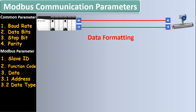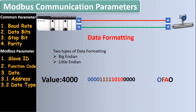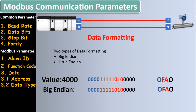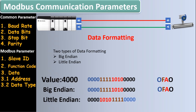Data formatting is the sequence of bytes of a word in digital data. There are two types: big endian and little endian. For example, take the value 4000 in decimal. In big endian data formatting, data is transferred as-is — there is no shifting of any byte. In little endian, the least significant byte comes first. This applies to both decimal and hex values. Intel and AMD use little endian format; IBM and Motorola use big endian format.